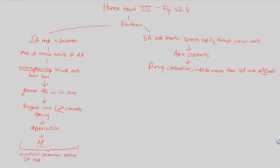The AV node is known as the atrioventricular node, located right between the right atrium and the right ventricle. We started at the right atrium at the SA node, propagated throughout the atria, caused the atria to contract, and simultaneously moved the message to the AV node. At the AV node, a very important event occurs: a purposeful, deliberate delay of the impulse — for about one-tenth of a second.